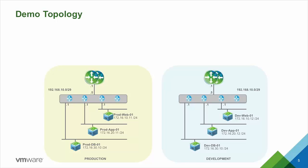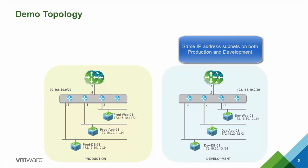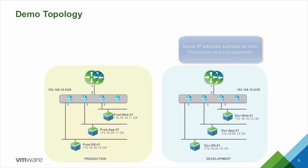We also have a development environment that uses similar networks — web, application, and database — that connect to the NSX distributed router, which again connects to the NSX Edge, the green router on top. If you look at the IP address spaces on both sides you can see that they are the same, so we are talking about a true multi-tenant environment with IP overlapping.